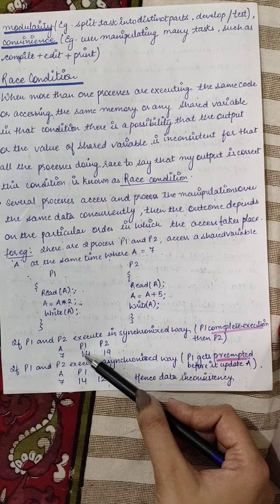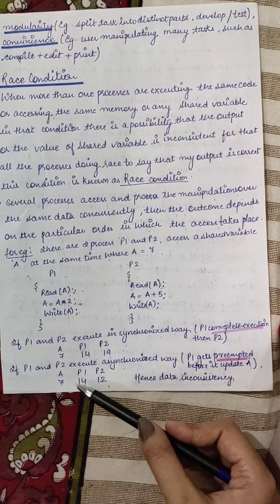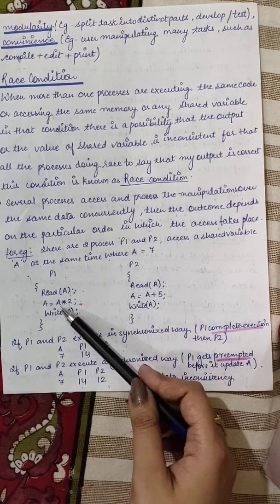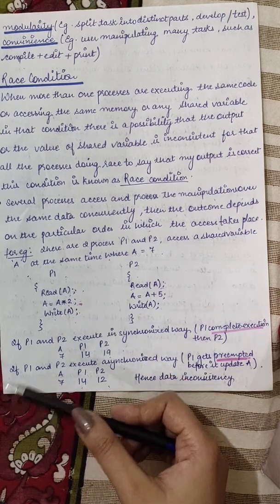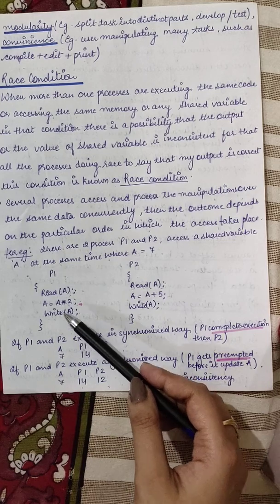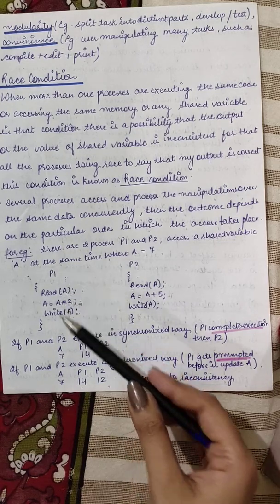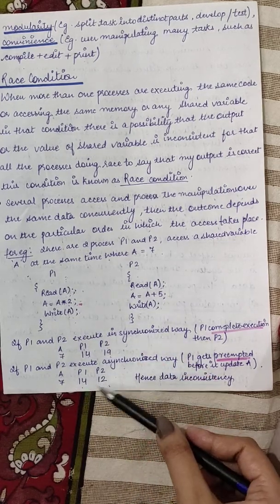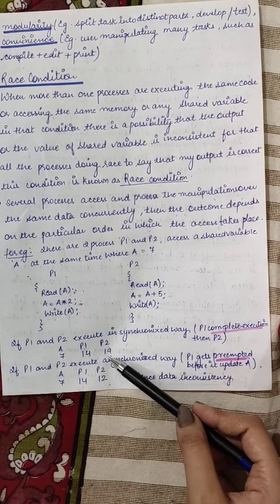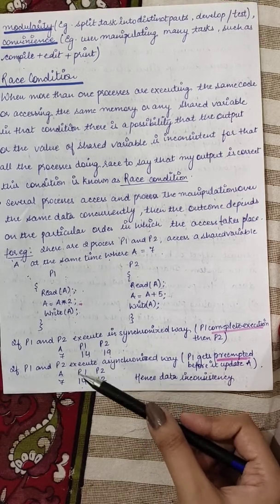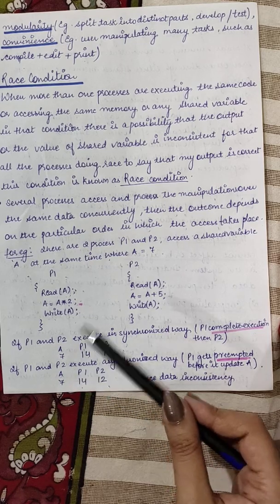Ab isne 14 write to nahi karaya hai, thik yeh aap yaad rakhna, to P2 kya read karayega? 7 karayega. 7 mein plus 5 = 12 or yeh value ko write karayega. Ab aap ke P1 ki value pe jab control wapas jayega woh value of a ko write karayega jo ki aapki 14 hai, 7 duni 14 yaha se nikala hua. To value of a ab aapki P1 se kitna hai? 14. Or P2 se aaya 12. Pehle pehle case mein P1 or P2 se values aati thi 14 or 19. Yahi data inconsistency.